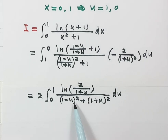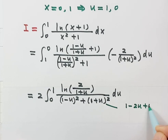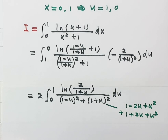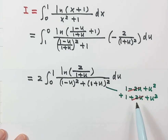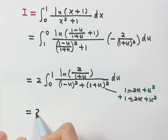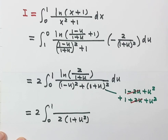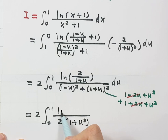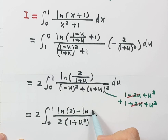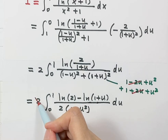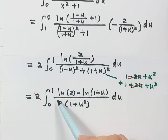Now let's expand the two squares in the denominator. We have (1-u)² = 1 - 2u + u² and (1+u)² = 1 + 2u + u². The ±2u terms cancel, leaving 2 + 2u², which factors as 2(1+u²). So the bottom becomes 2(1+u²).